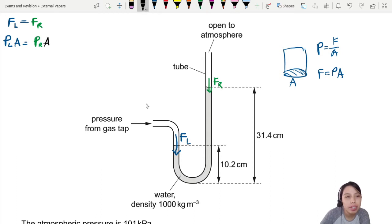P times A, P times A. Area is the same, so P times A equals P times A. Areas can be cancelled out.